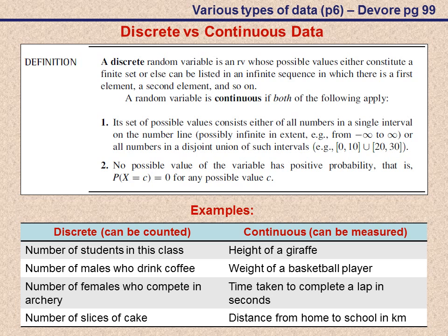Or, secondly, it can be any number in this disjoint union of such intervals. So let's say it can take on any value between zero and 10, or between 20 and 30. Then we consider a variable as a continuous variable.